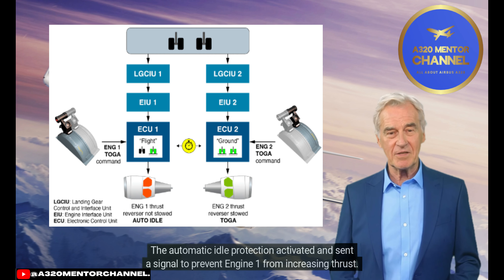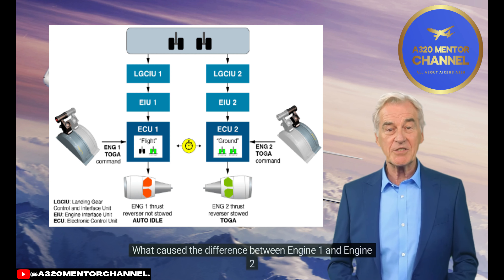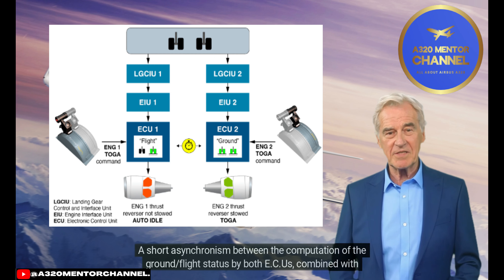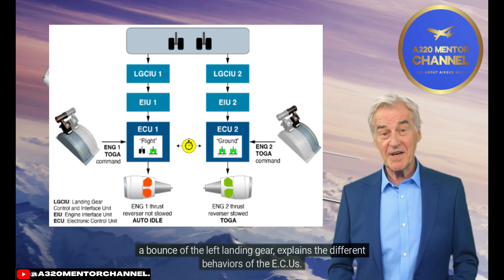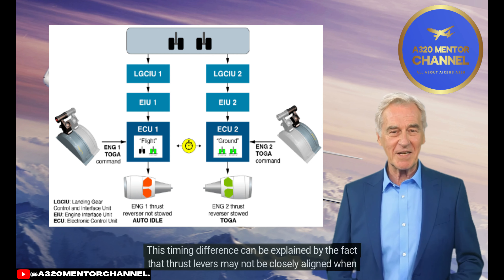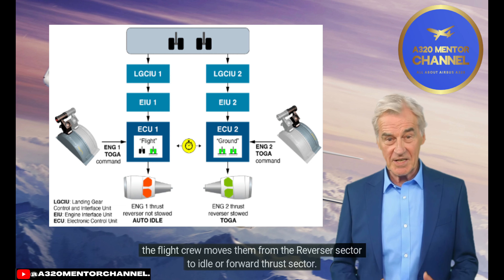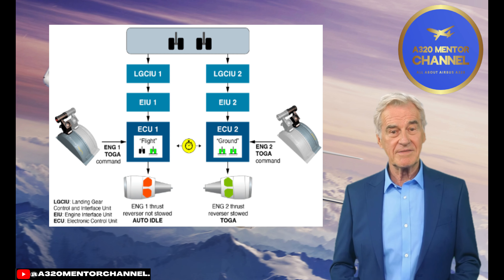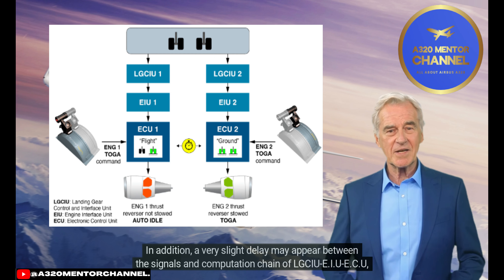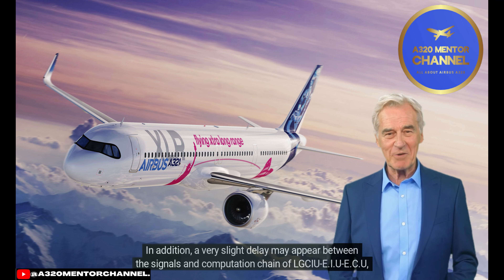What caused the difference between engine 1 and engine 2: A short asynchronism between the computation of the ground/flight status by both ECUs, combined with a bounce of the left landing gear, explains the different behaviors. This timing difference can be explained by the fact that thrust levers may not be closely aligned when the flight crew moves them from the reverser sector to idle or forward thrust sector. In addition, a very slight delay may appear between the signals and computation chain of LGCIU and ECU, which are independent for the left and right sides.